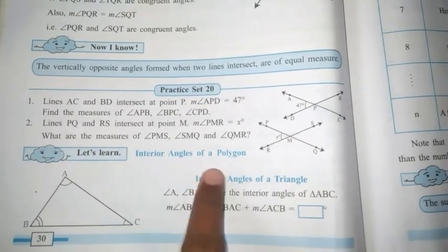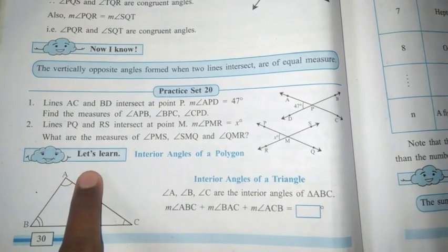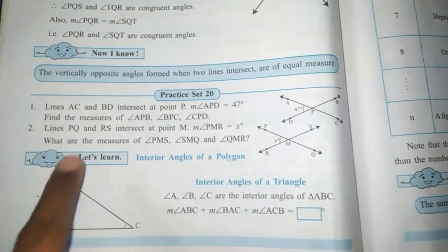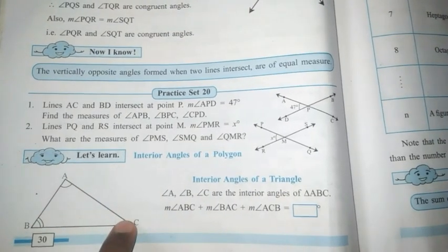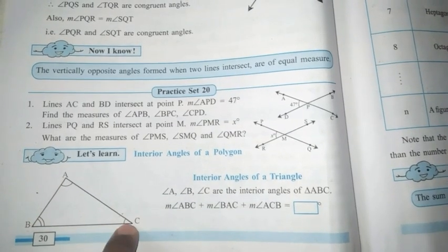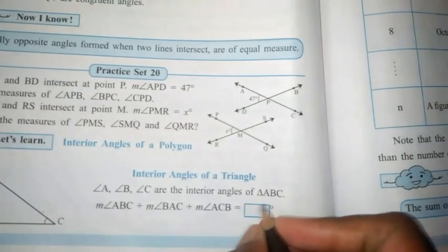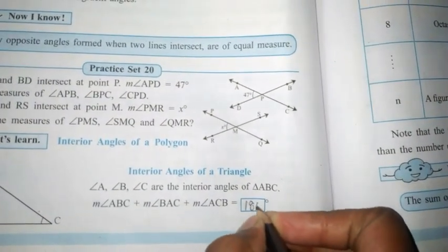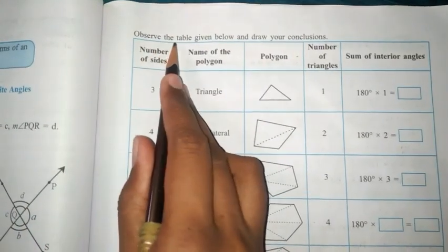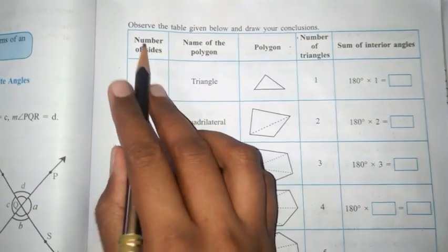The interior angles of a polygon — angle A, angle B, and angle C — are the interior angles of triangle ABC. If we take the sum of the measures of angle A, angle B, and angle C, we get 180 degrees. Observe the table given below and draw your conclusion. The columns are: number of sides, name of the polygon, number of triangles, and sum of the interior angles.